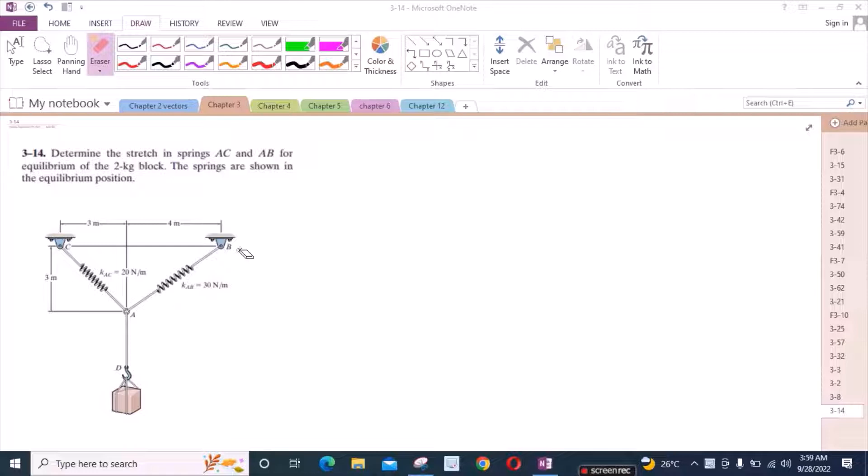Welcome back to the solutions manual. In this video, we will solve problem 3-14 from R.C. Hibbeler and Juning's Statics 14th edition. According to this problem, we have to determine the stretch in springs AC and AB for equilibrium of the 2kg block. The springs are shown in the equilibrium position.